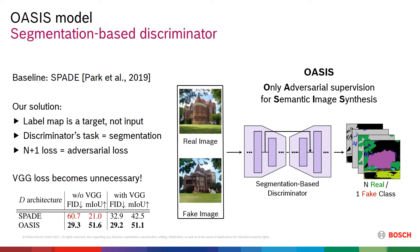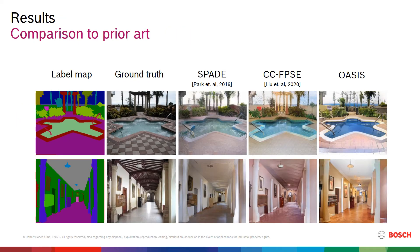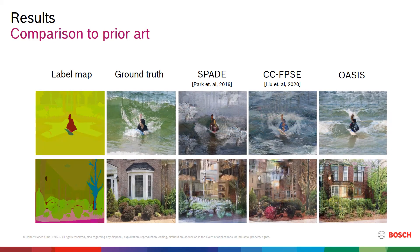The name of our model is OASIS, as it needs only adversarial supervision for semantic image synthesis. Compared to previous models, OASIS achieves better visual quality of generated samples, with color and texture distributions closer to real images. Our model produces plausible results even for complex scenes where semantic classes occupy large areas. As we show in the paper, we achieve an average improvement of 6 FID and 5 MIOU points over the previous state-of-the-art performance.